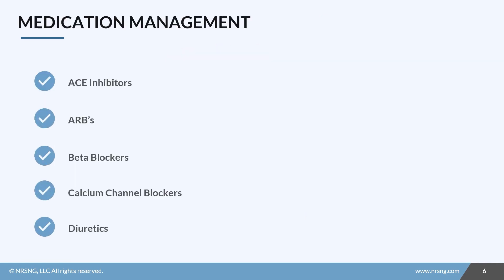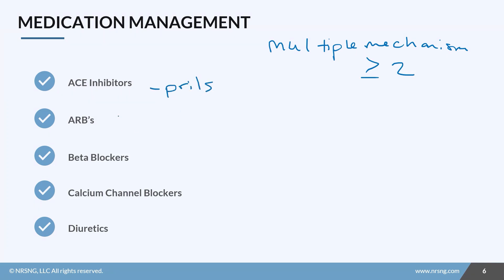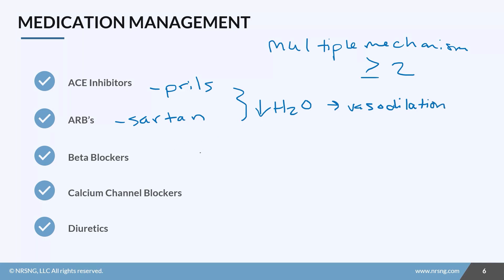When it comes to medication management, the goal for hypertension is to address blood pressure with multiple mechanisms to decrease stress on the vessels. Most hypertension patients will be on at least two of these medications. We have ACE inhibitors — our 'prils' like captopril — and ARBs — our 'sartans' like losartan. Both prevent water retention and lead to vasodilation by blocking the RAAS system, allowing blood pressure to decrease.